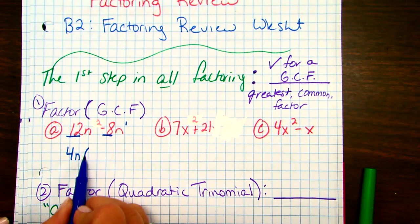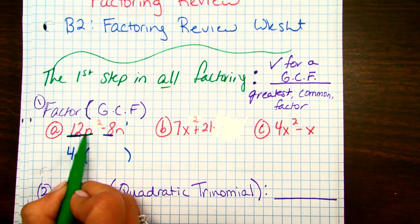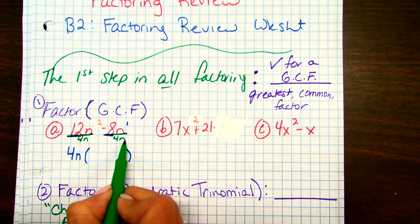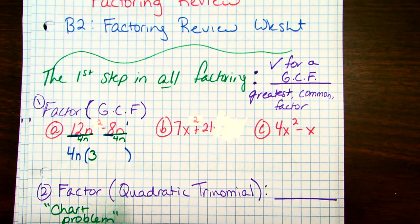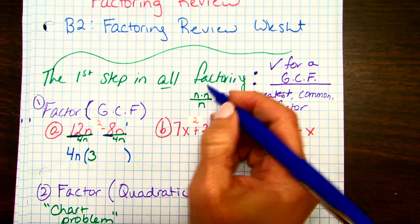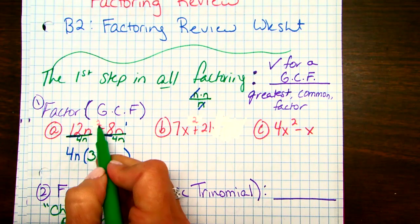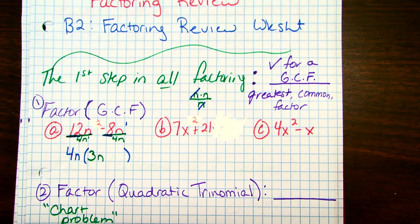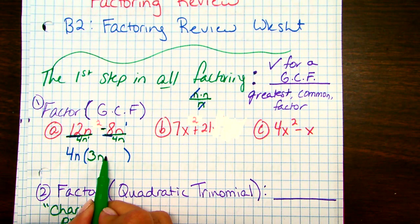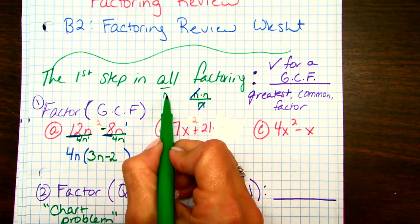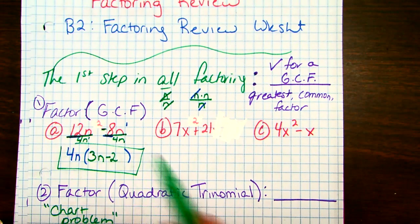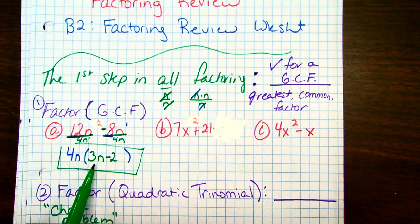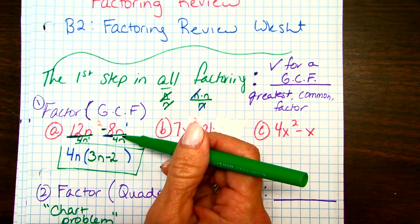That's our GCF. What we do now is put whatever's left over in the parentheses. What I mean by left over is: when I divide both of these terms by 4n, whatever I get goes in the parentheses. This is just the reverse of the distributive property. So 12 divided by 4 is 3, and you subtract your exponents — there are 2 n's on top, 1 on the bottom, so 2 minus 1 is 1, giving us n. Negative 8 divided by 4 is negative 2, and the n's cancel out. That's the answer. We can check it: 4n times 3n is 12n², and 4n times negative 2 is negative 8n.